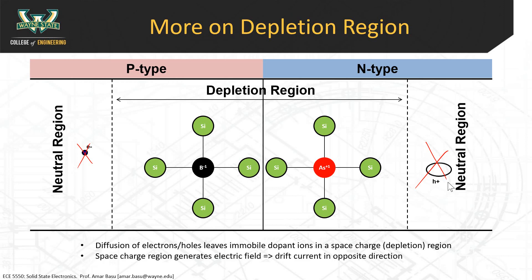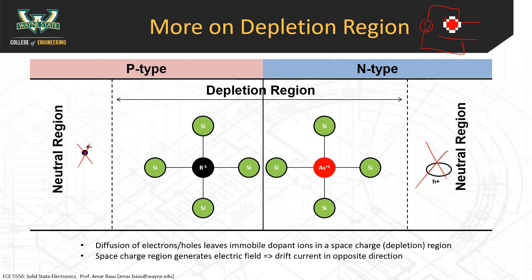Now, the depletion region, because of these space charges, develops an electric field. When you have positive charge buildup on one side and negative charge buildup on the other side, it's like a classic parallel plate capacitor — you get an electric field. In this case, we're not putting a voltage source on there; we just have a buildup of positive and negative charge. But that buildup generates an electric field, and it actually generates a small potential across the junction. That 0.7 volts you talk about with diodes — this is exactly where that comes from.